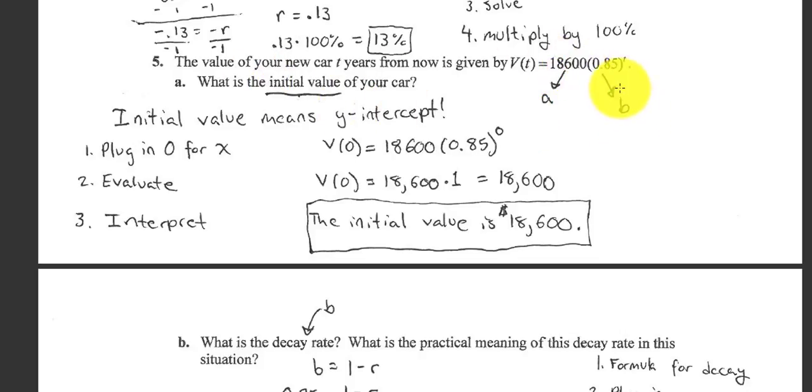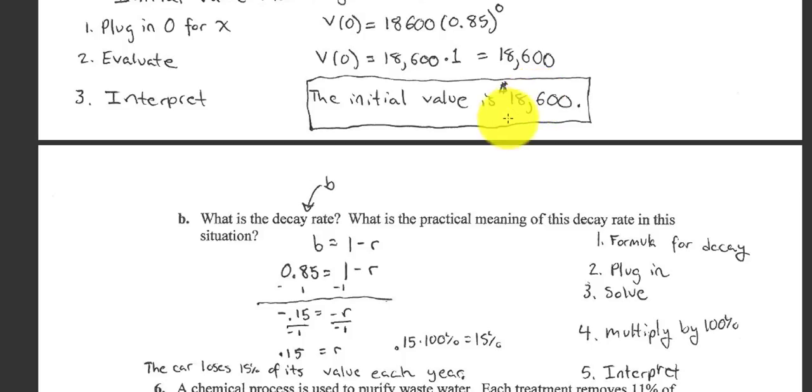The B, the decay factor is 0.85. So we can figure out a decay rate. So what is your initial value? Well, that's the A, 18,600. If I sub in 0 for T or X, anything raised to 0 is 1 and you're left with this 18,600.